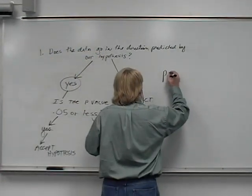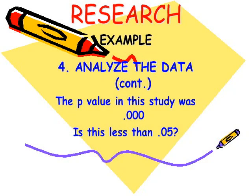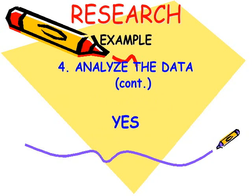The p-value in this study, which means probability, statistical significance, meaning the same thing, is 0.000. Tenths, hundredths, thousandths. So I'm saying if we did this study the way we did it, a thousand times,